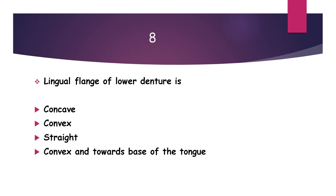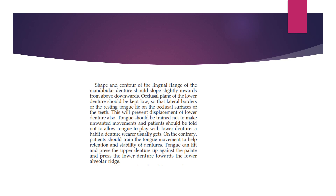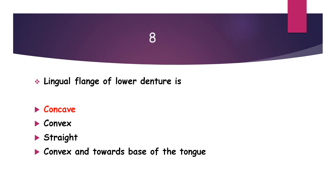Next question: what is the shape of the lingual flange of the lower denture — concave, convex, straight, or convex towards the base of the tongue? According to Sorrento et al., the shape and contour of the lingual flange of the mandibular denture should slope slightly inwards from above downwards, which will prevent displacement of the lower denture. The answer is concave.